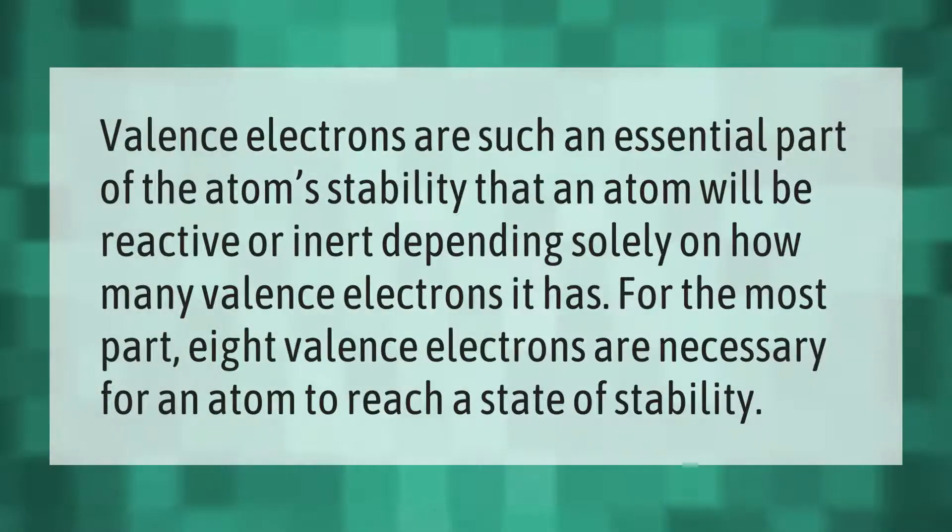Valence electrons are such an essential part of the atom's stability that an atom will be reactive or inert depending solely on how many valence electrons it has. For the most part, eight valence electrons are necessary for an atom to reach a state of stability.